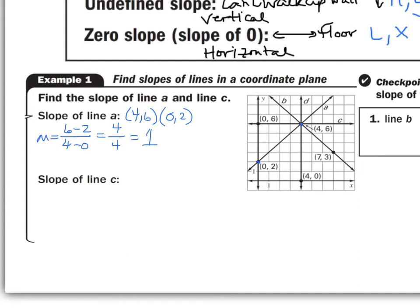For the slope of line C, find two points on line C, which are (0, 6) and (4, 6). Take the Y values on top — 6 minus 6 — divided by the X values on the bottom — 4 minus 0. Six minus 6 is 0, divided by 4. So this line has a slope of 0. It's a horizontal line, so it has a slope of 0.